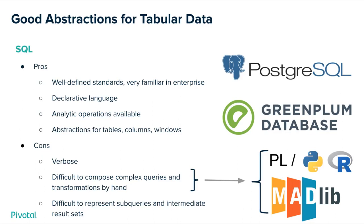There are some things that can help you in Postgres in particular, such as procedural language extensions for Python and R, which can help with complex transformations. Also the MADlib machine learning library has a lot of utility functions to assist with those complex queries. But representing all these complex queries and intermediate result sets is still a little challenging in SQL.